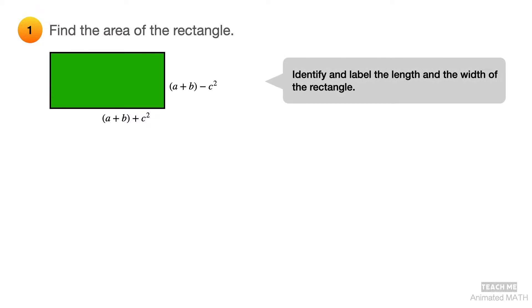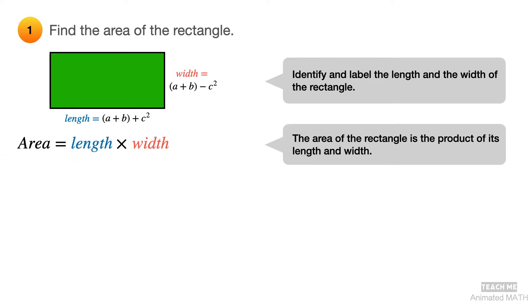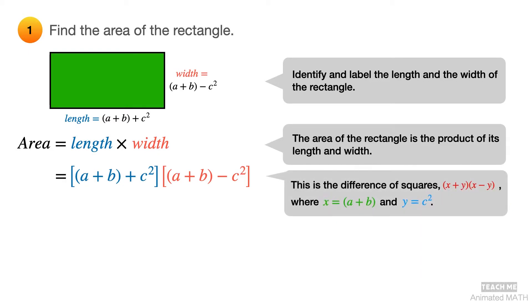Since this is a rectangle, start by identifying and labeling its length and width. The area of a rectangle is equal to its length times its width. Substitute the values of the length and width. It might not be as obvious for beginners, but this actually follows the pattern for difference of squares, but with x equal to a plus b and y equal to c squared.